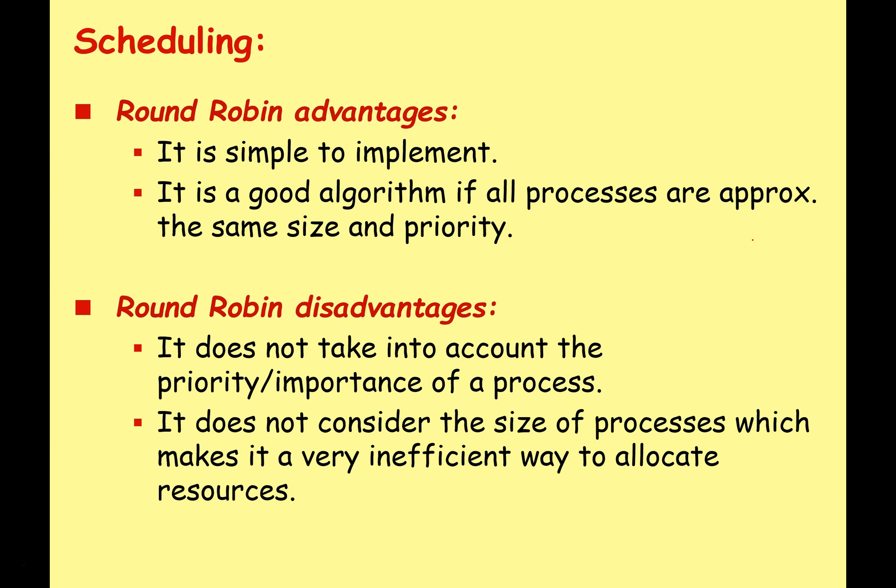Round robin has some advantages: it is simple to implement and it is a good algorithm if all the processes are approximately the same size and the same priority. However, round robin does not take into account the priority or the importance of a process, and it does not consider the size of a process, which can make it a very inefficient way to allocate resources.